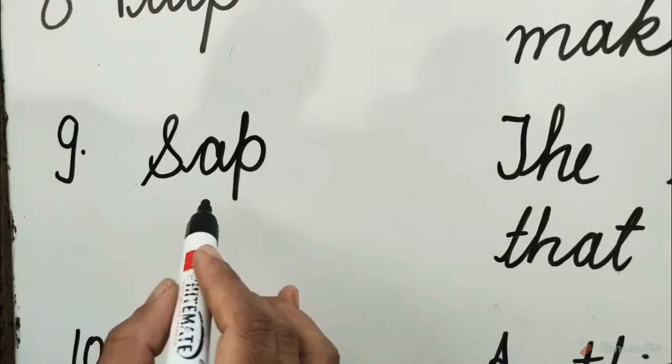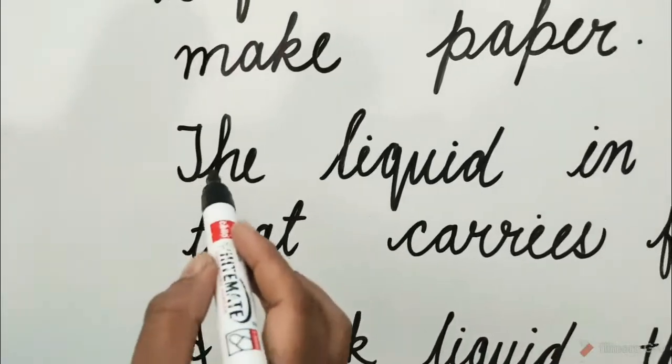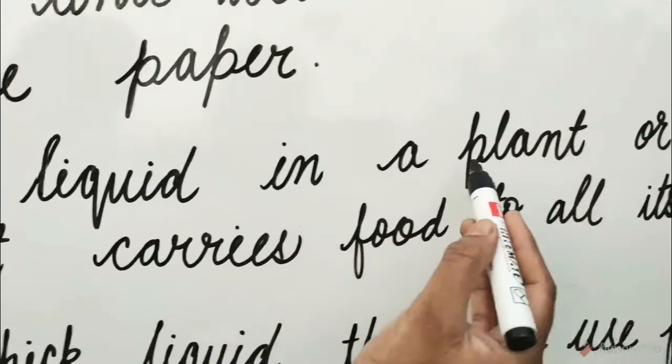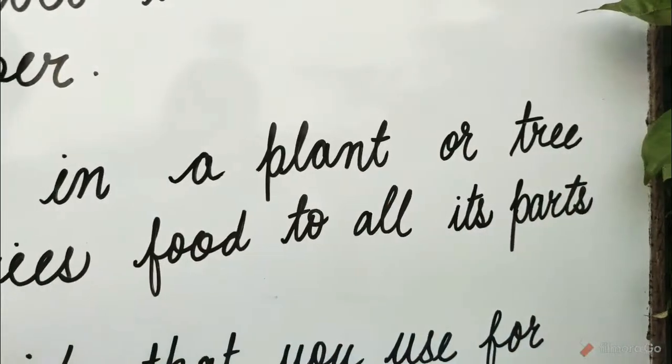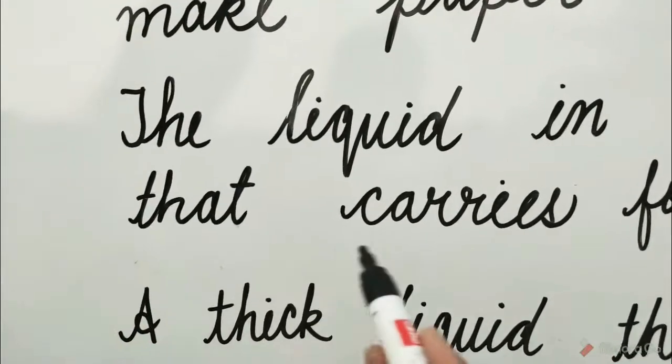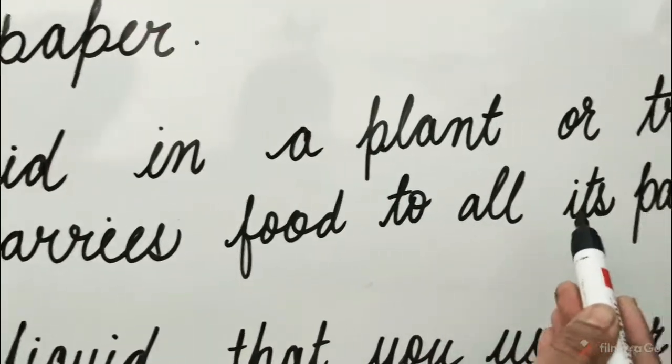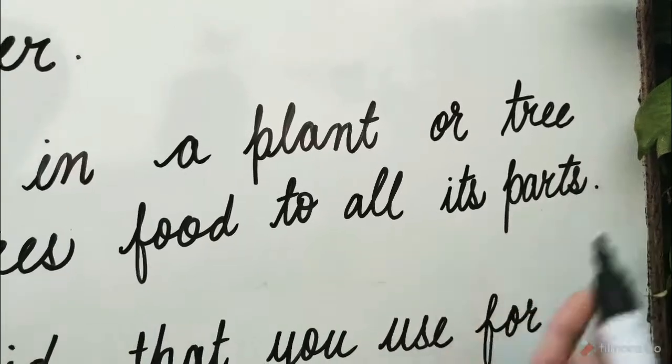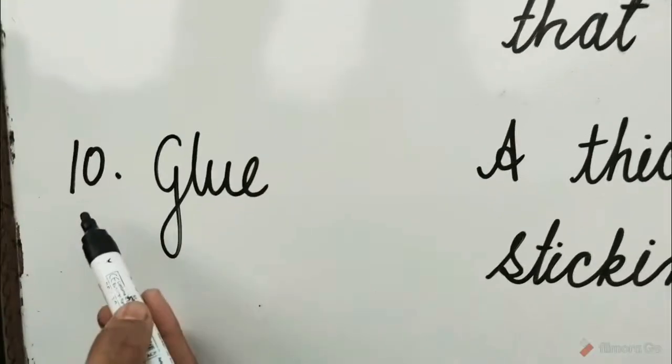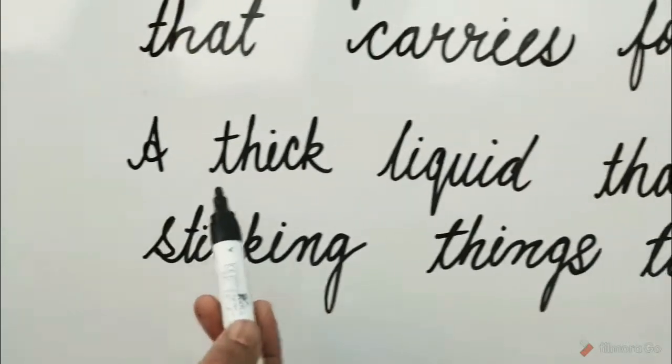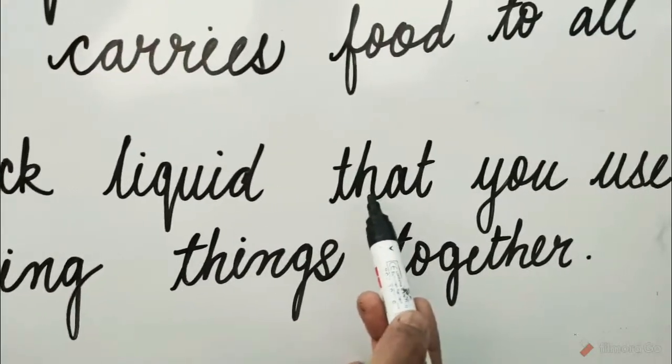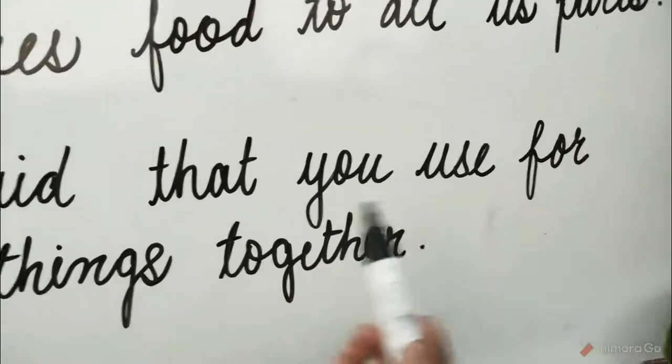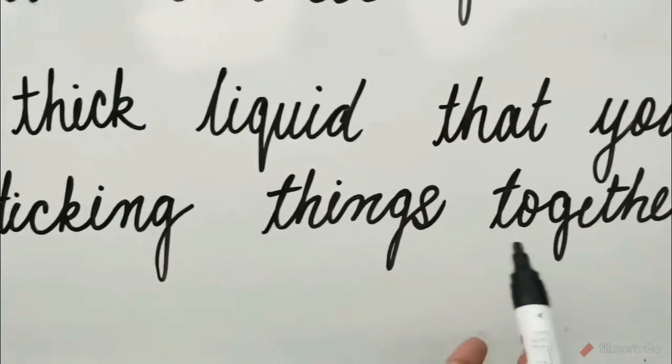Number 9: Sap means the liquid in a plant or tree that carries food to all its parts. Number 10: Glue means a thick liquid that you use for sticking things together.